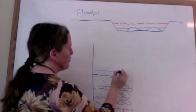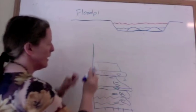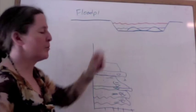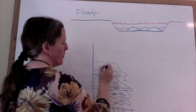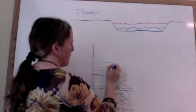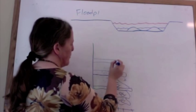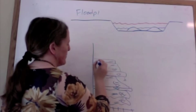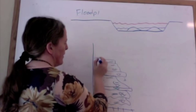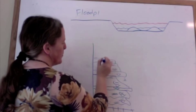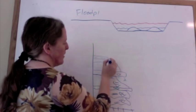In general, as this channel fills in and migrates somewhere else, you end up with an overall fining upward sequence, and then maybe some sands at the top and then some floodplain deposits, maybe a thin layer. They're often fairly silty.